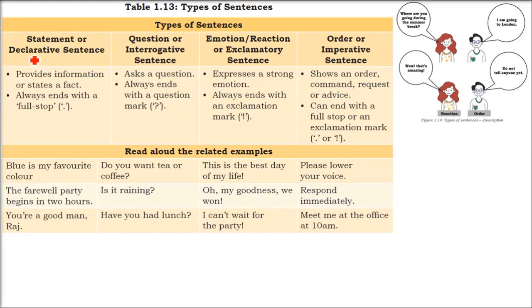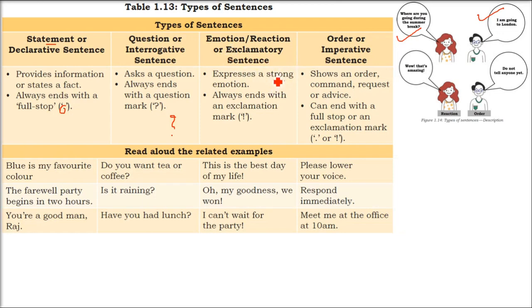Statement or declarative sentences are just providing information or stating a fact, and they always end with a full stop. Interrogative sentences ask a question and always end with a question mark. Exclamatory sentences express a strong emotion or reaction and end with an exclamation mark. Imperative sentences show an order, command, request, or advice and can end with either a full stop or an exclamation mark.